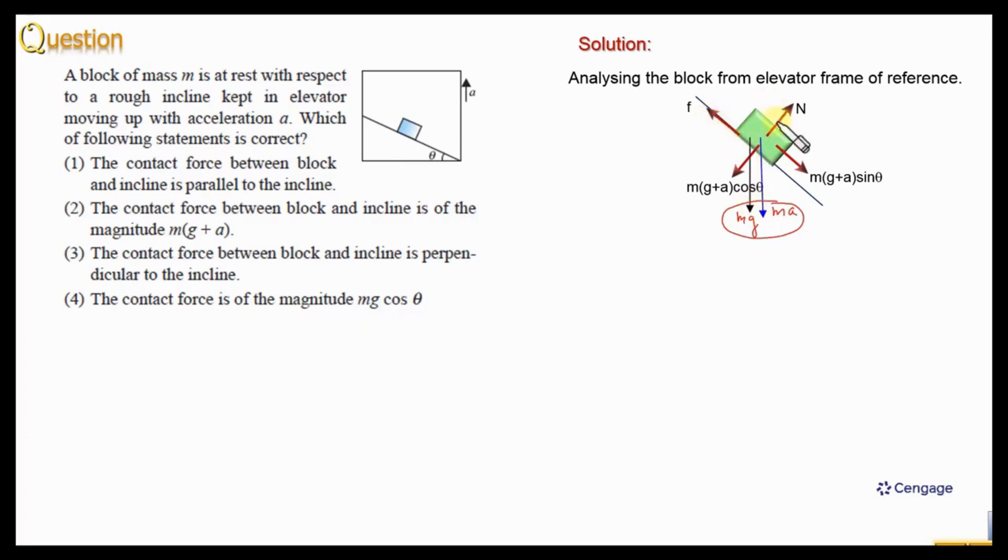And this block is at rest with respect to the inclined plane. So here we can write f equal to mg plus a sin theta. So this is the equation for equilibrium of the block parallel to the inclined surface. And normal reaction from free body diagram, we can write n equal to mg plus a cos theta. This is the normal reaction.